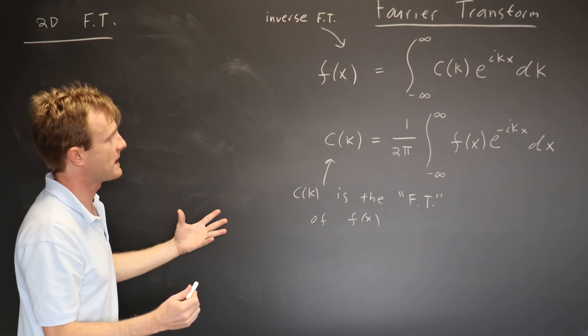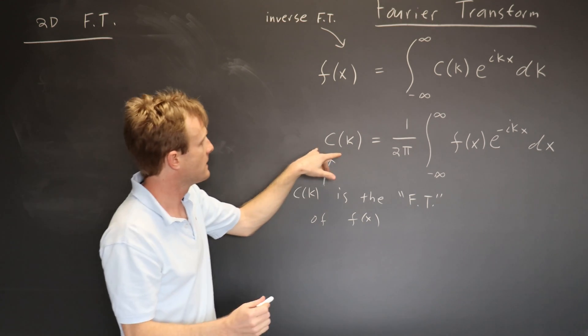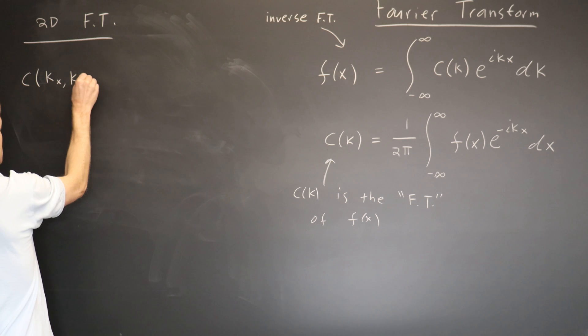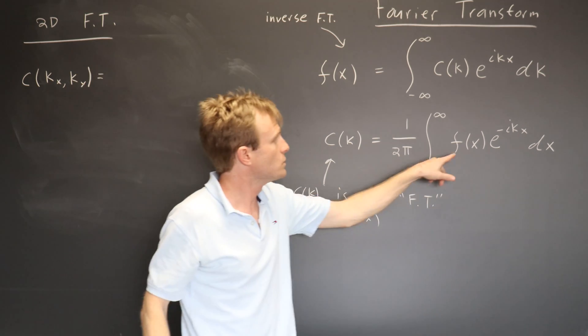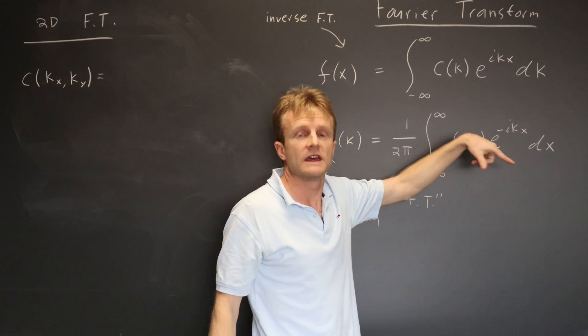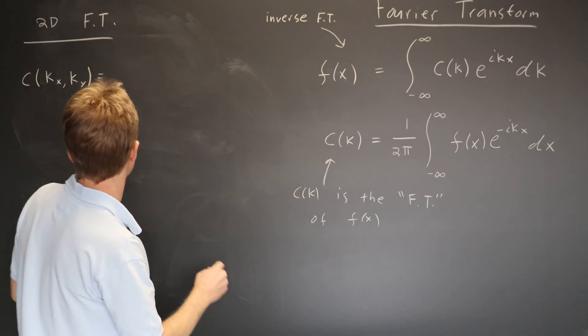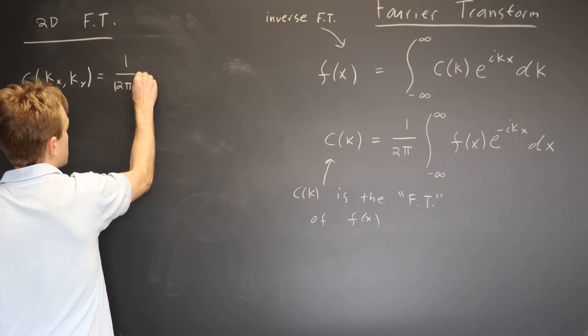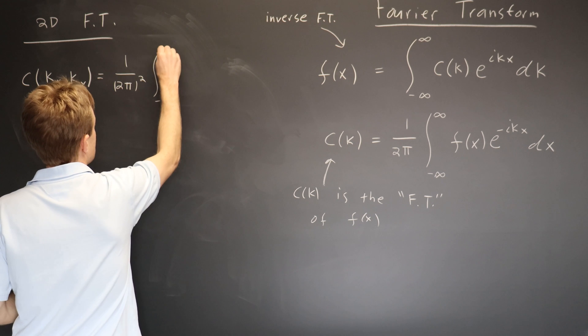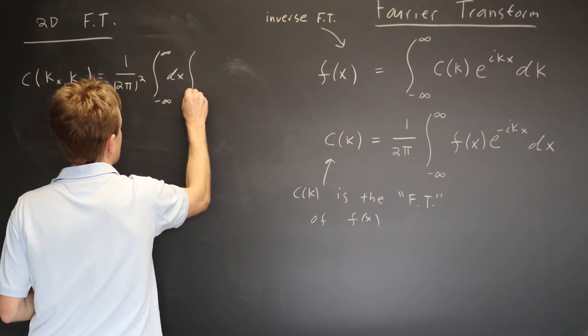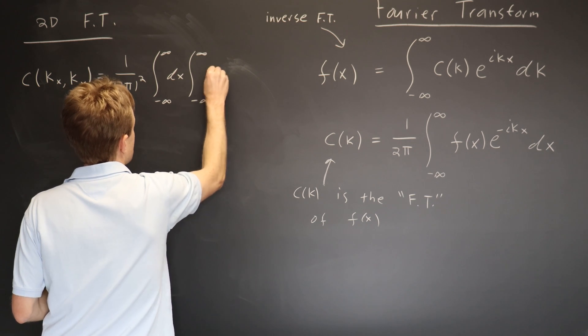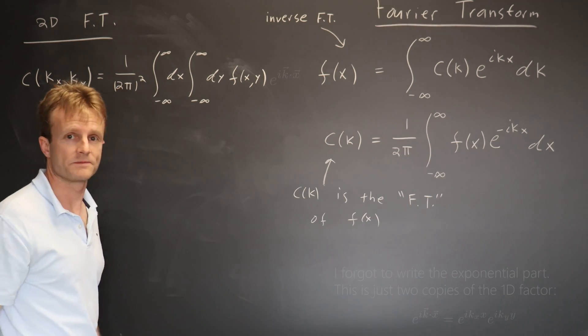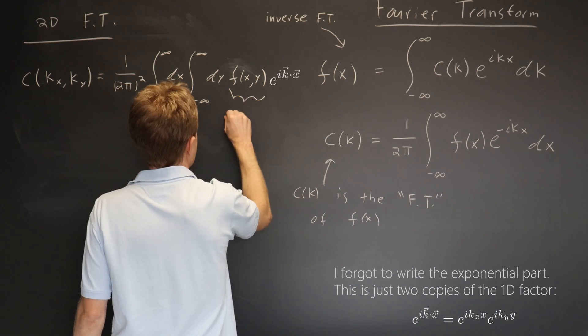And so the two-dimensional Fourier transform, you basically do it twice. So you would have some function c of k sub x, k sub y, which would be you first Fourier transform with respect to x, and then you Fourier transform with respect to y, or in the other order, or you just write it as a double integral, 2 pi squared integral minus infinity to infinity dx, integral minus infinity to infinity dy of some function f of x, y. Okay, so we're going to think of this as the image.